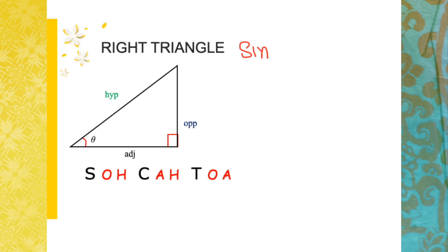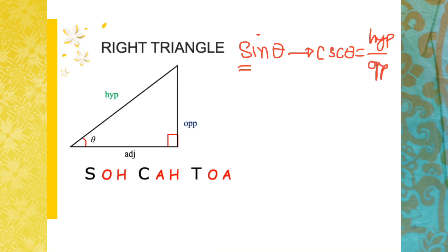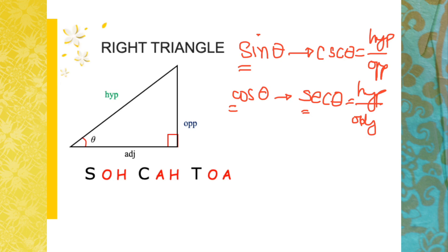Now for the inverses: since sine starts with an S, its inverse cosecant starts with a C. Cosecant of an angle equals hypotenuse over opposite. Cosine starts with a C, so its inverse secant starts with an S — secant of an angle equals hypotenuse over adjacent. And the inverse of tangent is cotangent, which is adjacent over opposite.